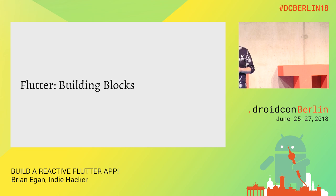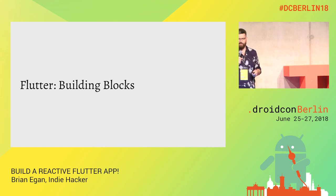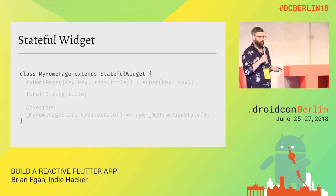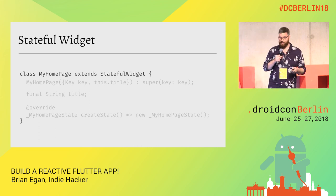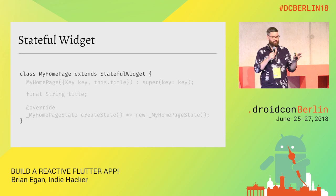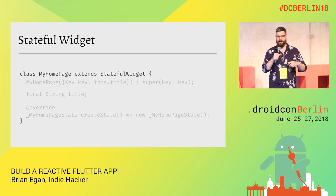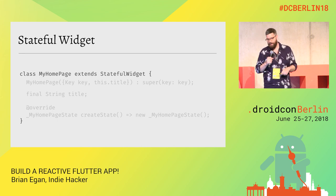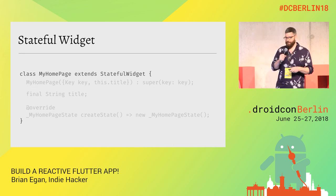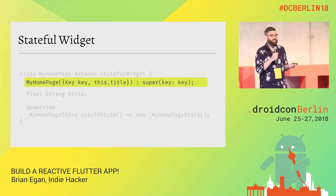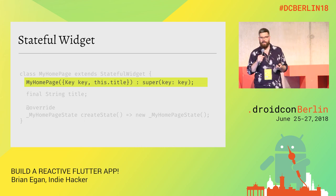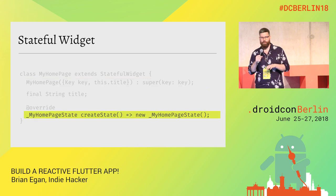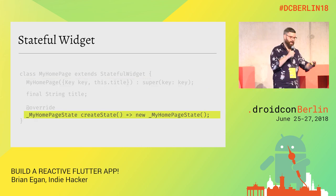If you've taken a spin with Flutter, the building blocks it gives you — pretty quickly you'll play with the stateful widget. This is the example generated when you run `flutter create`. It'll generate a Dart file with this exact class. A stateful widget takes in some properties — in this case a title, which is just a string — and then almost immediately creates a companion object called a state class.